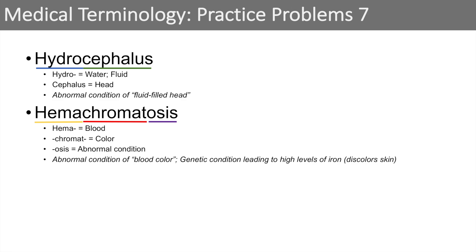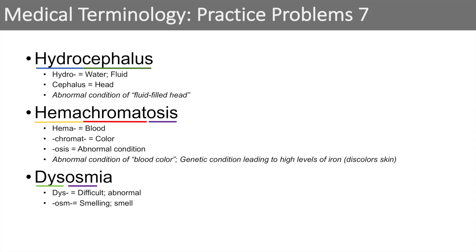The last word in this lesson is dysosmia. Dys means difficult or abnormal. Osm means smelling or to smell. And ia is a condition. So when we put it together, dysosmia means a condition of abnormal sense of smell. That was the second practice problems lesson for the medical terminology basics and anatomy lesson series. I hope you found this video helpful. If you did, please like and subscribe for more videos like this one. Thank you so much for watching, and I'll see you next time.